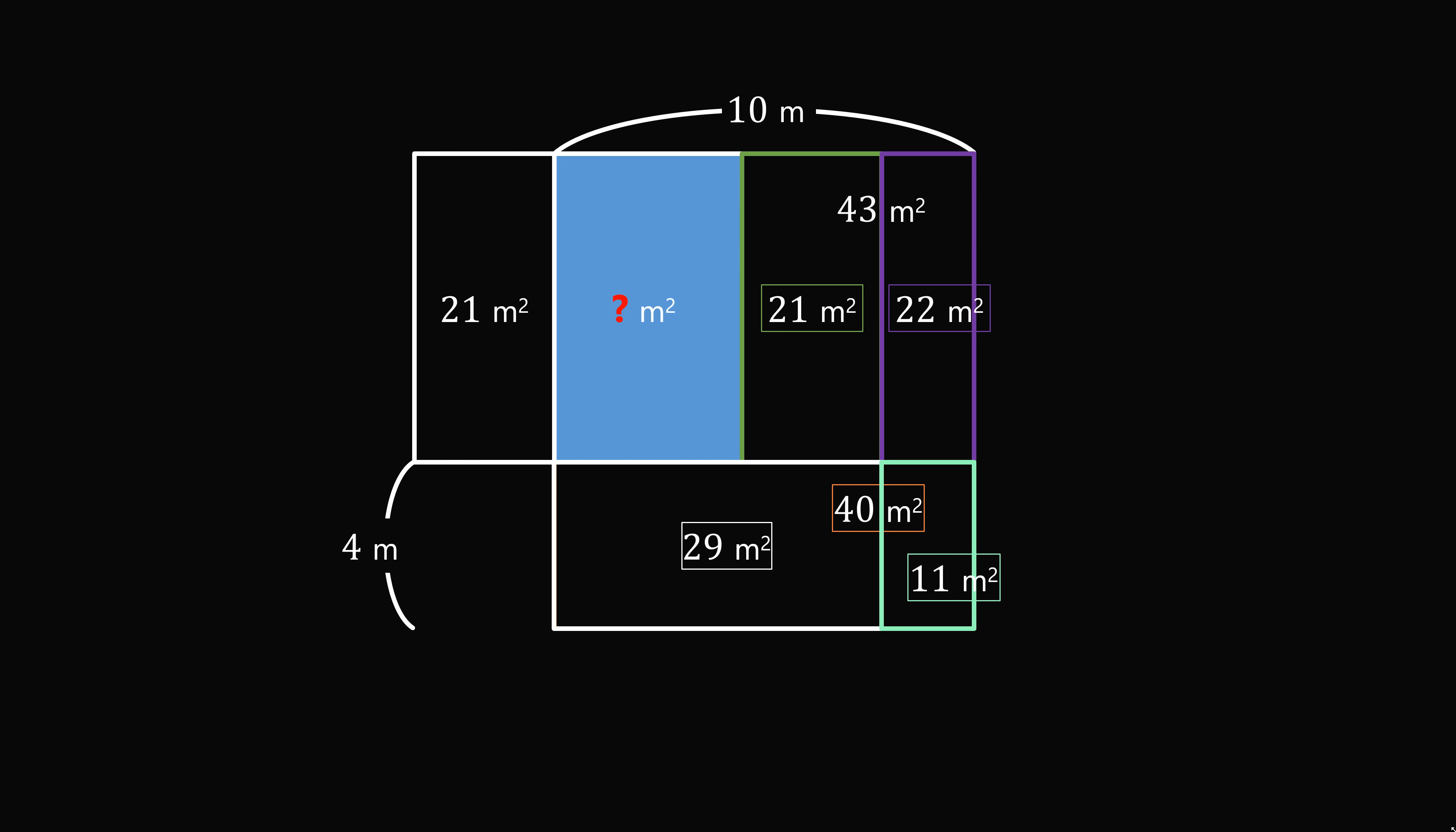Now focus on the two rectangles on the right-hand side. They have areas of 22 and 11. Both these rectangles share the same width. Therefore, the top rectangle must have twice the height.